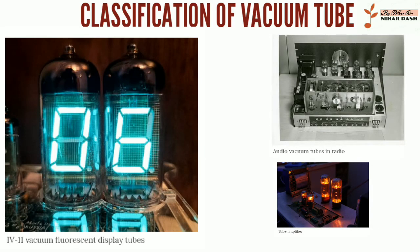Classification of thermionic vacuum tubes is by the number of active electrodes. A device with two active elements is a diode, usually used for rectification. Devices with three elements are triodes, used for amplification and switching. Additional electrodes create tetrodes, pentodes, and so forth, which have multiple additional functions made possible by the additional controllable electrodes.